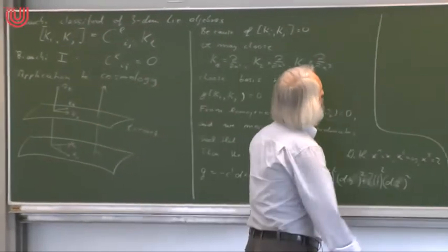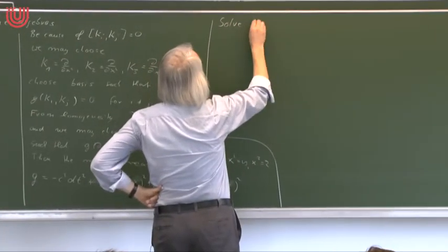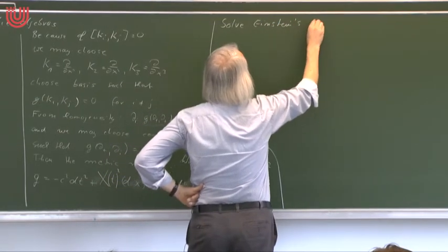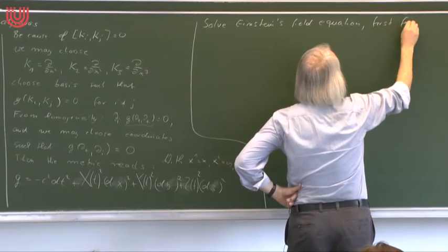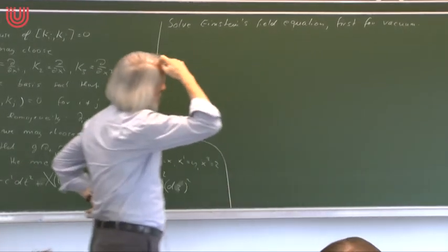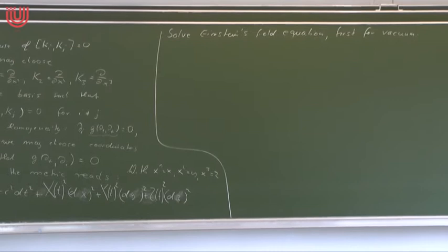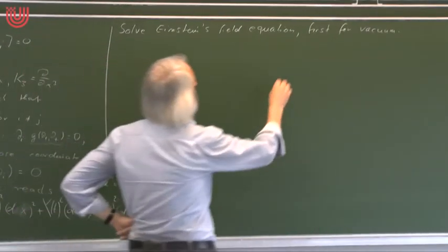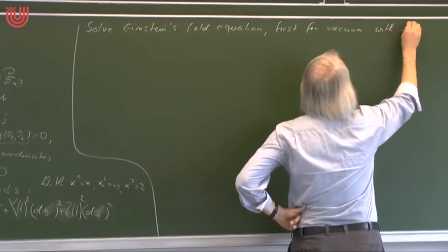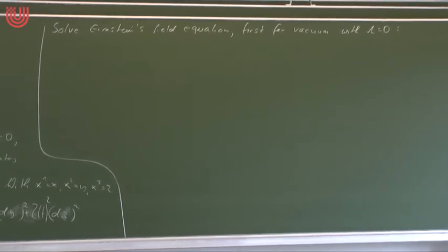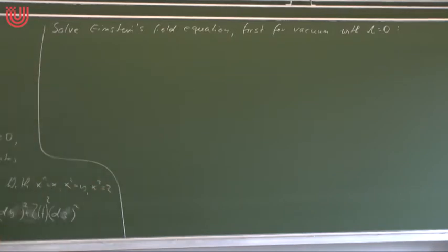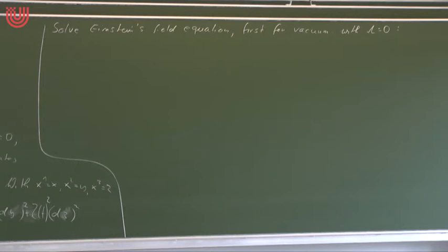So we want to solve Einstein's field equations, first for vacuum with λ = 0, meaning R_μν = 0. We have to calculate the Ricci tensor. We don't do this by hand; I have done the calculation with Mathematica and will write down the result.